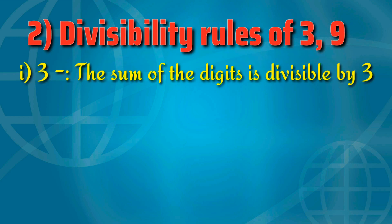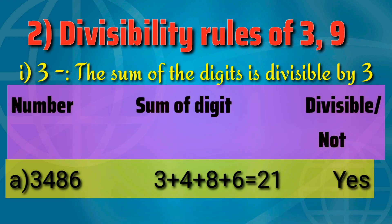First, divisibility rule of 3. If the sum of all digits is divisible by 3, the number is divisible by 3. For example, 3486. The sum of all digits is 3+4=7, 7+8=15, 15+6=21. 21 is divisible by 3, so the whole number is divisible by 3.